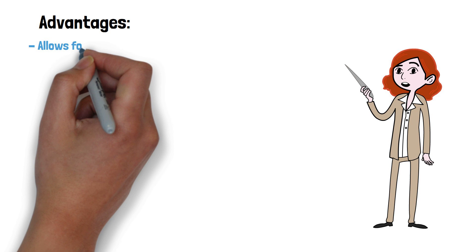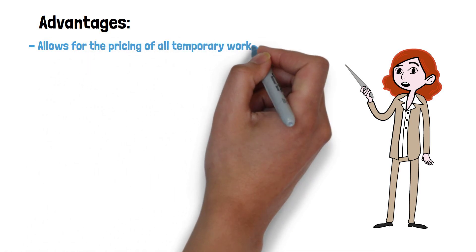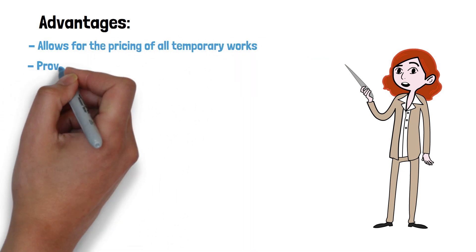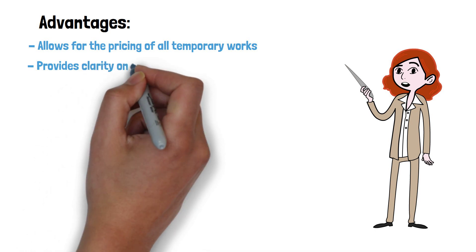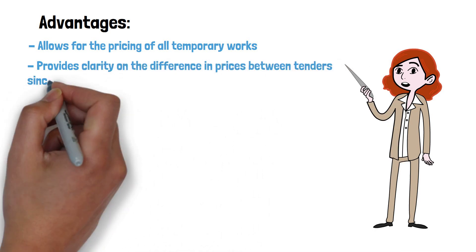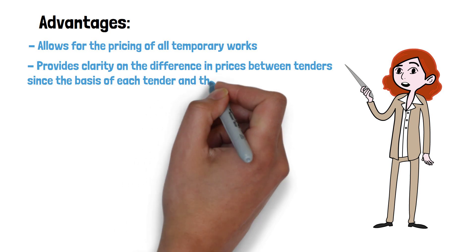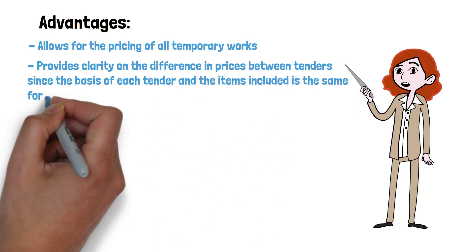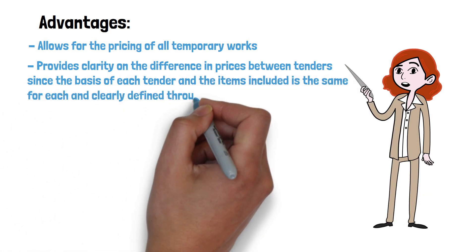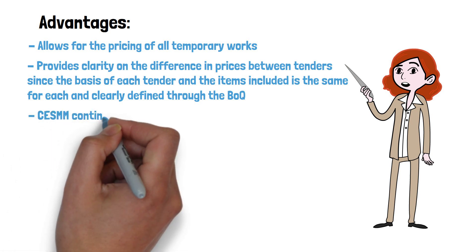Some of the other advantages it provides include allowing the pricing of all temporary works which do not form part of the final construction. It can also help to provide clarity on the difference in prices between tenders, since the basis of each tender and the items included is the same for each and clearly defined through the BOQ.